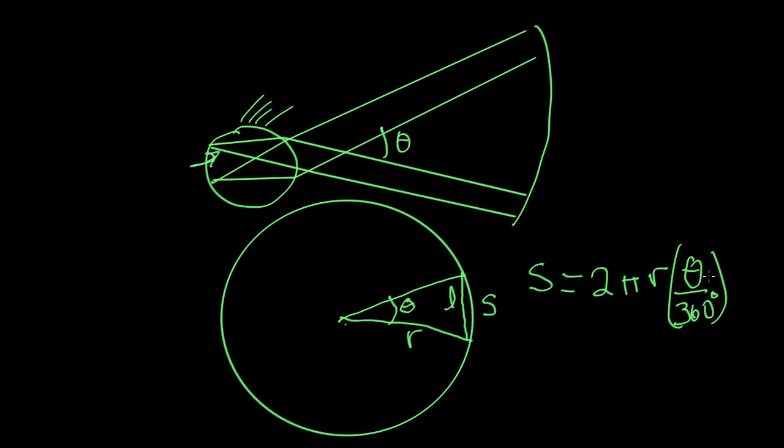If the r becomes very large, so the circle becomes very big, you can imagine that l and s would become very close to the same thing. Because when you look at a circle up close, it ends up looking like a bunch of lines connected together. And so if r is very, very large, then you end up with this relationship that the length l is equal to s is equal to 2 pi r theta over 360.